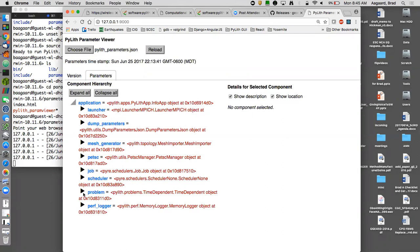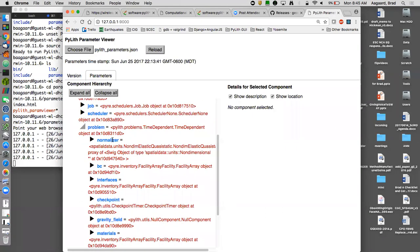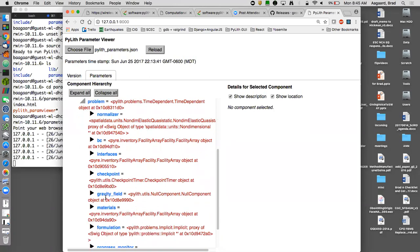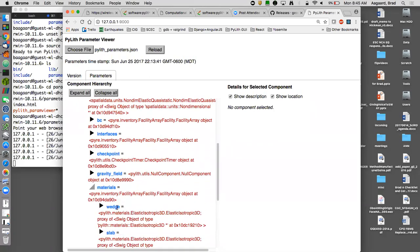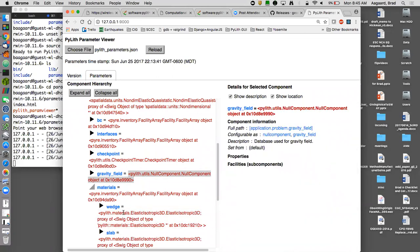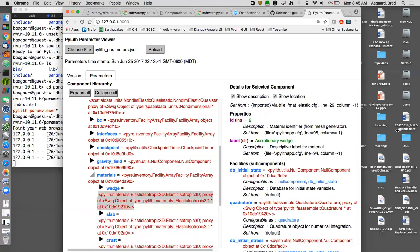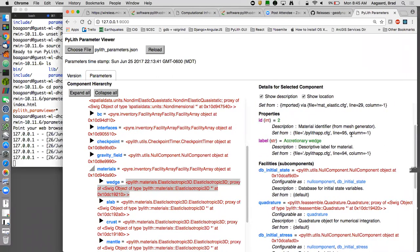Within the problem, we have normalization, non-dimensionalization of the problem, boundary conditions, interfaces, checkpointing which is not enabled, gravity field materials formulation. Here is our wedge. If we click on any of these components on the left-hand side, we see all of the information for that component on the right-hand side.